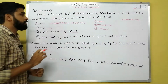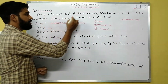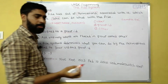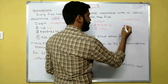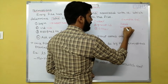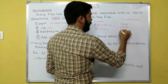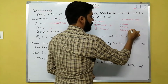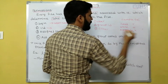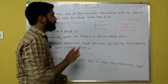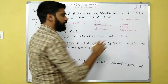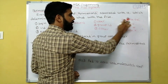Permissions means every file has a set of permissions. There are three types of permissions: you can either read, write, or execute. These are represented as r, w, and x respectively. These are the permissions allocated to a file like sample.txt.